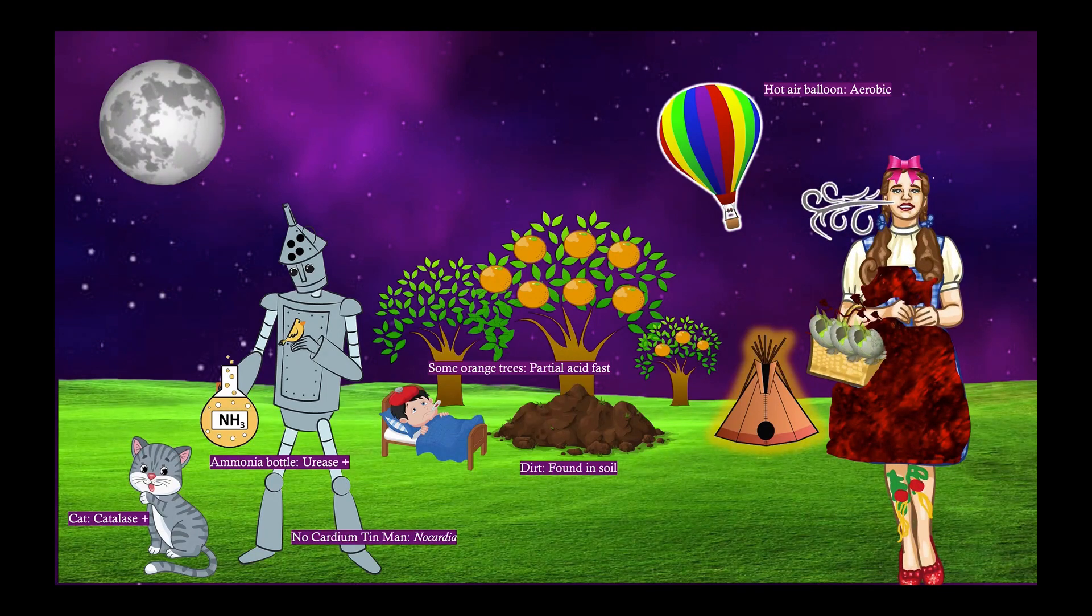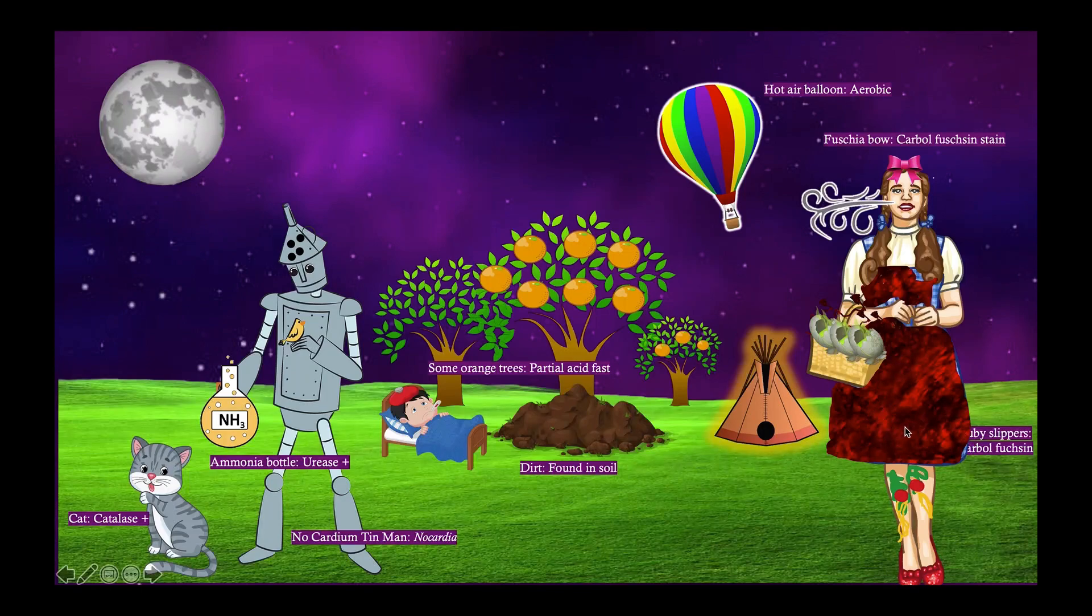And who is on the hot air balloon? Well it's Dorothy of course. And Dorothy looks really sick. Notice that she's got a fuchsia bow on. And that fuchsia bow will help you remember that this stains on carbolfuchsin stain, which is part of the Ziehl-Neelsen stain. She's also got ruby slippers and a ruby dress. And that will help you remember that on carbolfuchsin stain it stains red.